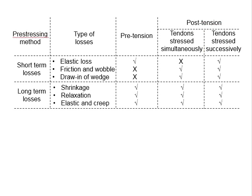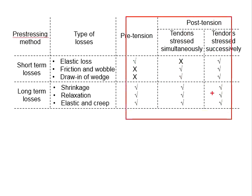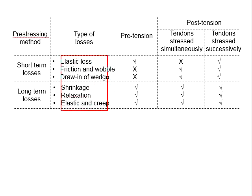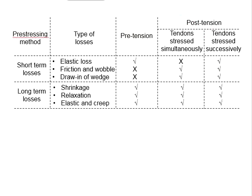It is to be emphasized that you need to understand the mechanisms of different pre-stressing methods in order to determine which types of losses apply and to accurately calculate the total losses on the member. One more important point: the equations for elastic losses in pre-tensioning and in post-tensioning are different, because the mechanism of elastic losses differs between the two. This will be discussed in detail when we introduce the equations for the different types of losses.